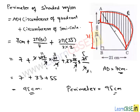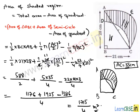Therefore, the area of the shaded region is 1715/4 cm² and the perimeter is 95 cm. This completes our solution.